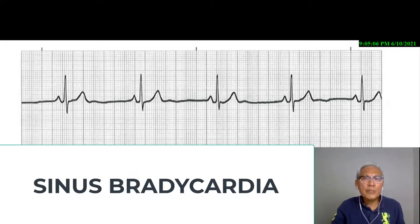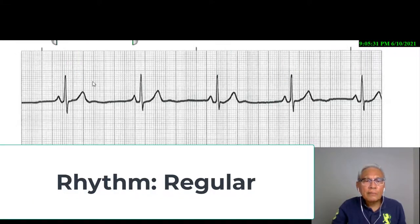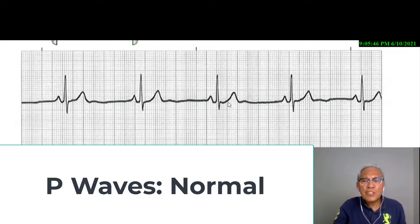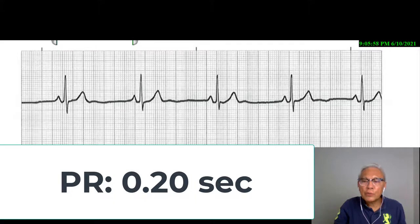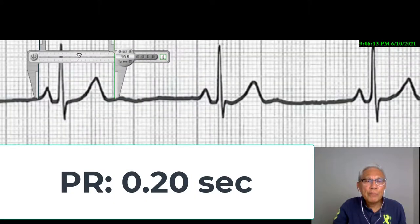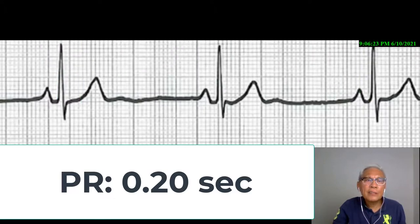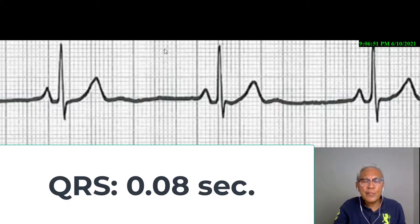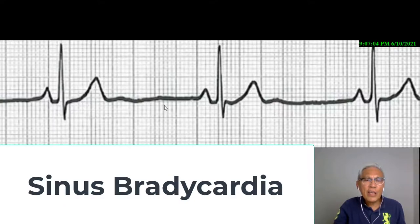Let's examine an example of sinus bradycardia. The rhythm appears to be regular. The rate, counting four QRS complexes in the six-second strip, is 40 beats per minute. P waves are present, preceding a QRS complex, persistent in shape, and pointing upwards — normal. Measuring the PR interval, it appears to be about five boxes, which is 0.20 seconds — normal. The QRS complex appears to be two boxes, 0.08 seconds — also normal. Inasmuch as this rate is less than 60 and has all the elements, the interpretation is sinus bradycardia.